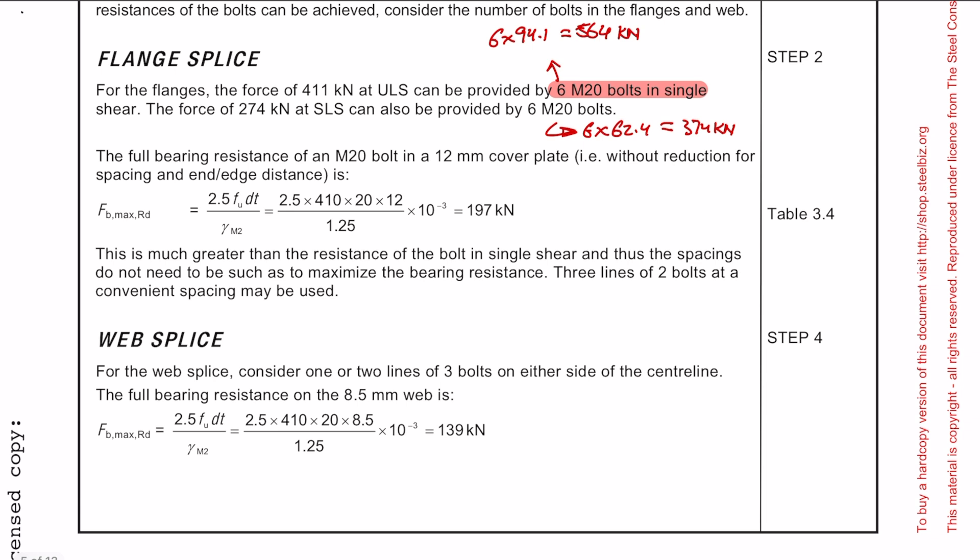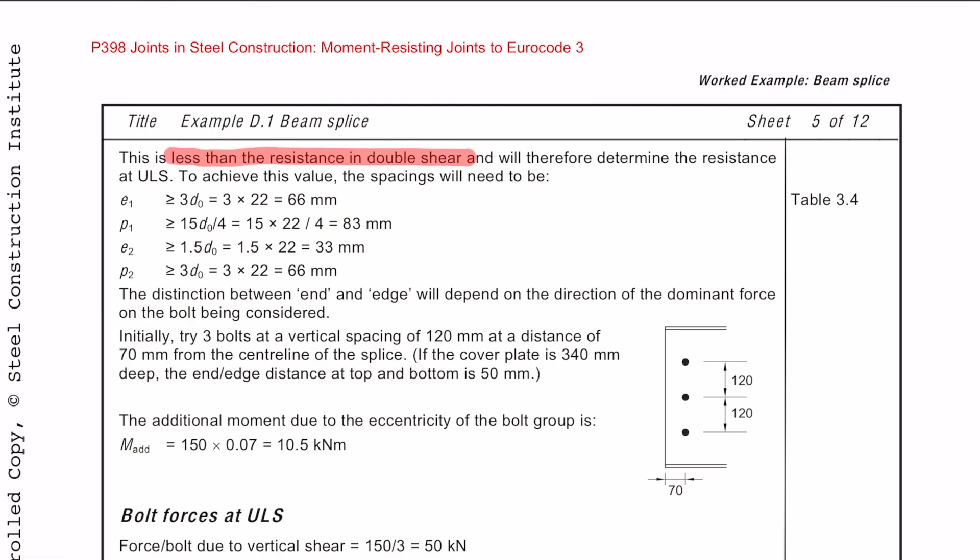So next we want to check the full bearing resistance of the M20 bolt. And because this value is greater than the bolt in single shear, we can essentially use three lines of two bolts at convenient spacing. We need to do a similar check for the web splice. But this time the full bearing resistance is less than the resistance in double shear. Therefore the spacing needs to adhere to the minimum spacings which we're about to calculate here.